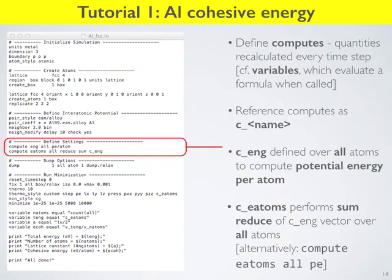Now we're defining some settings — adding instrumentation to our code to return parameters we're interested in. LAMMPS has an object class called a compute — quantities that are recalculated at every time step. You create a compute to calculate, say, the potential energy of your system or the kinetic energy of a particular region. Later we'll talk about variables, which are similar but evaluated only on demand rather than every time step.